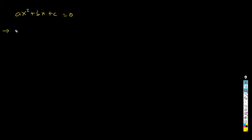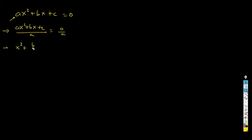Here we go. First thing, remember, you have to have your equation in standard form, which we already have, and then you have to make the coefficient of the x squared equal to 1. You don't want this a here unless it's a 1. So how do we make sure of that? We divide both sides of the equation over a. All of this over a equals 0 over a. And if I divide each of these terms over a, I get x squared plus b over a times x plus c over a equals 0. That's the first step.